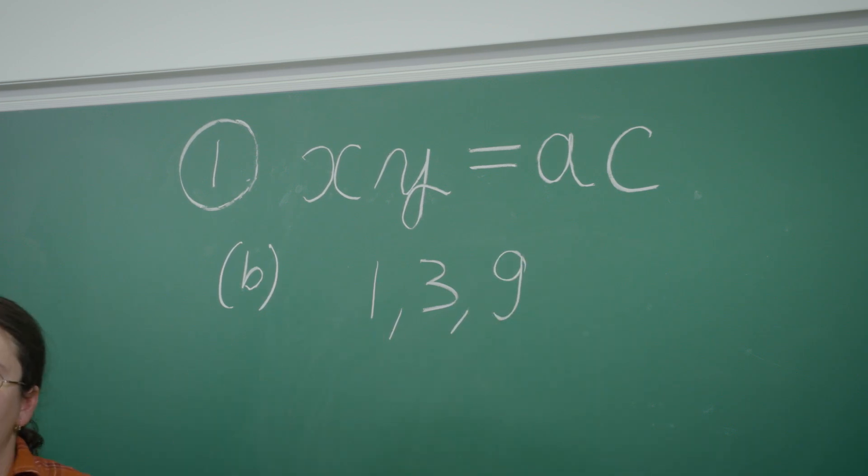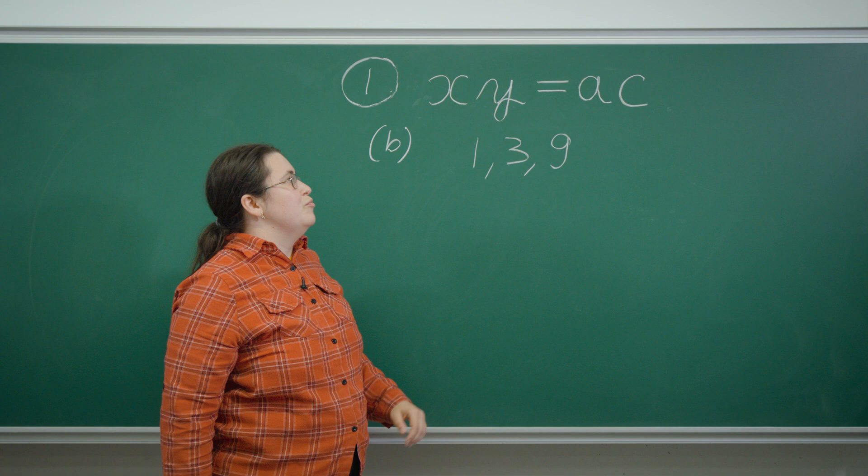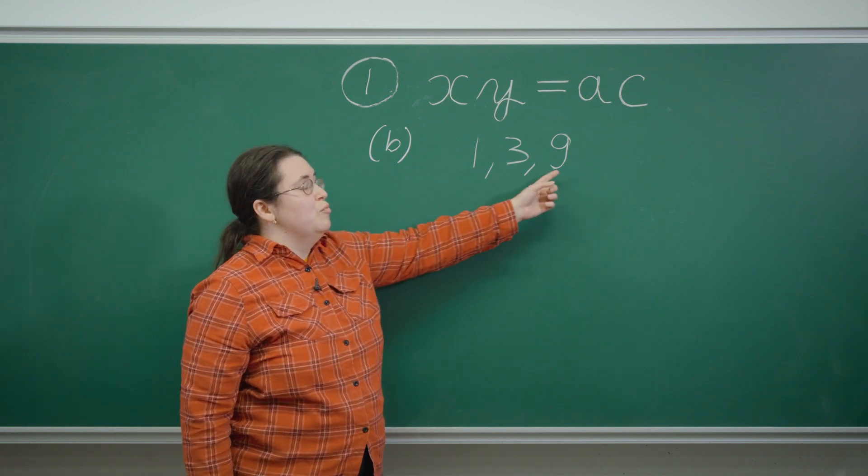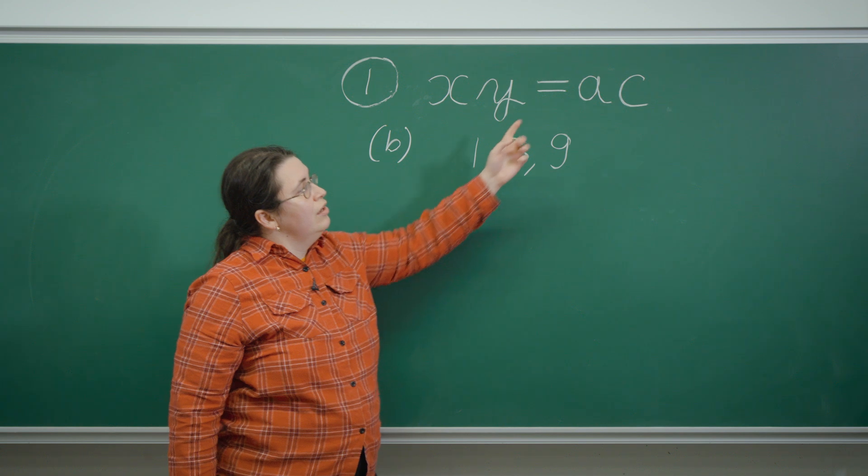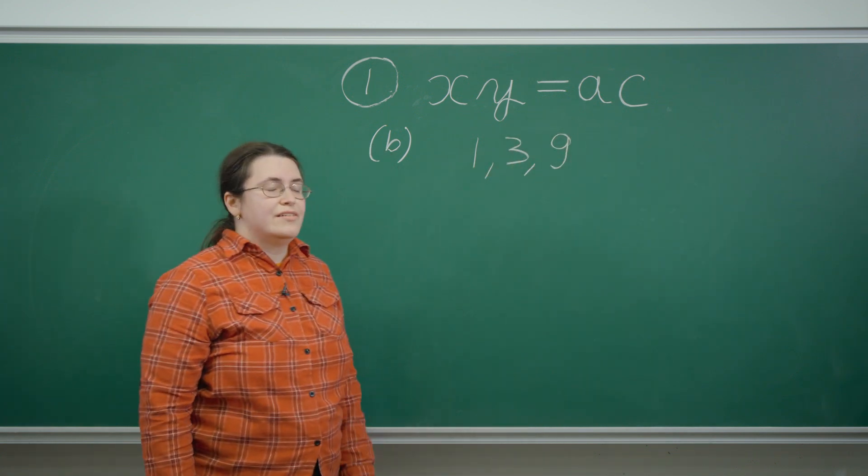And they have to be suitably paired up so that X times Y is 9. So it could be 1 times 9, 3 times 3, or 9 times 1. And ditto for A and C.